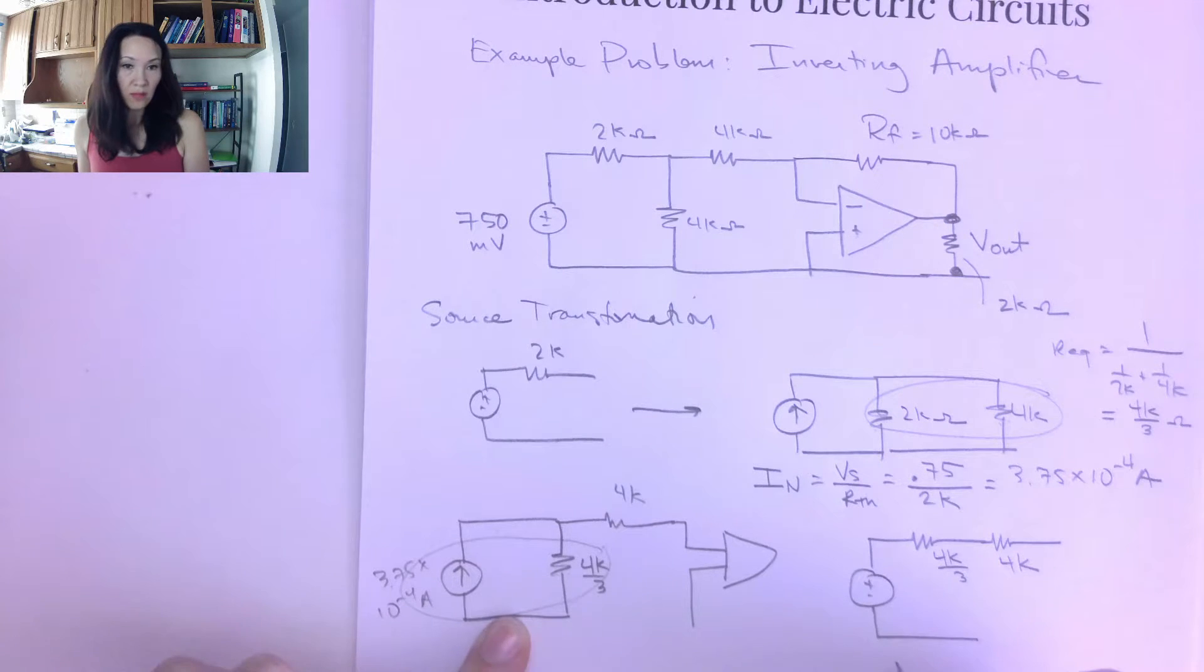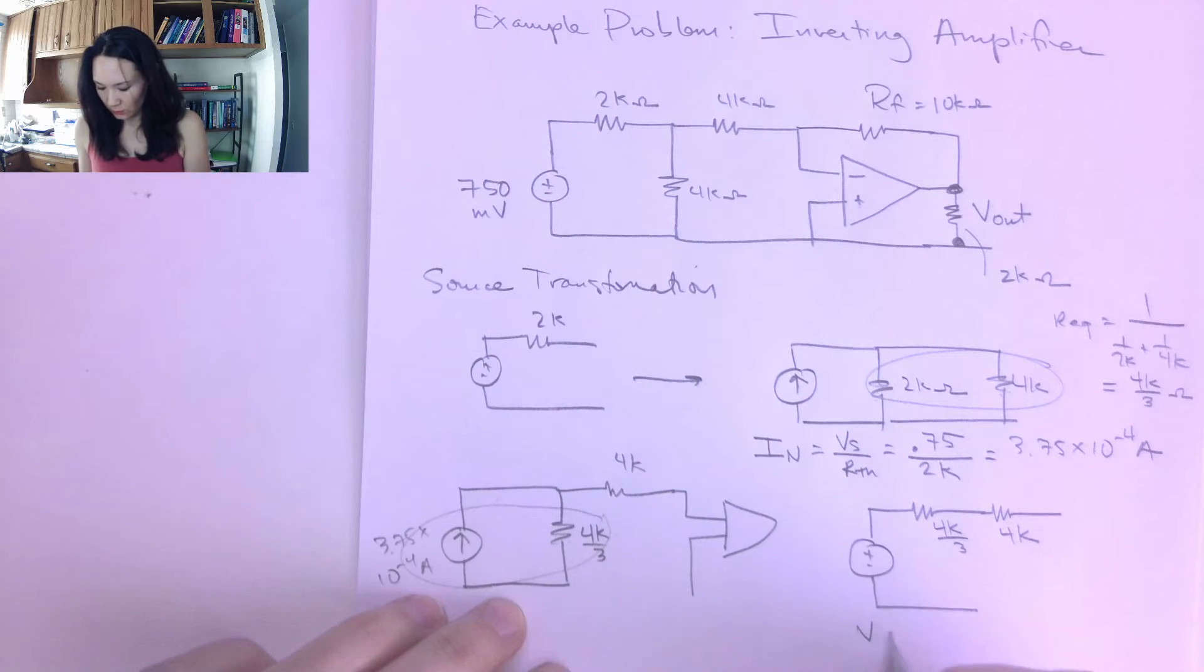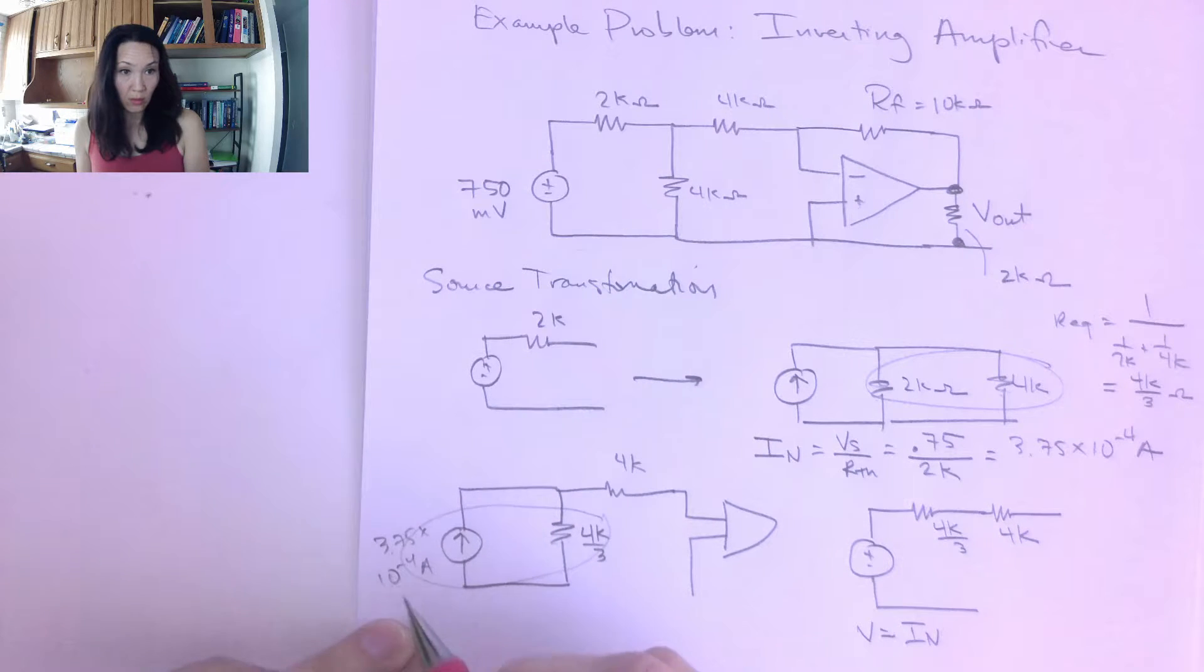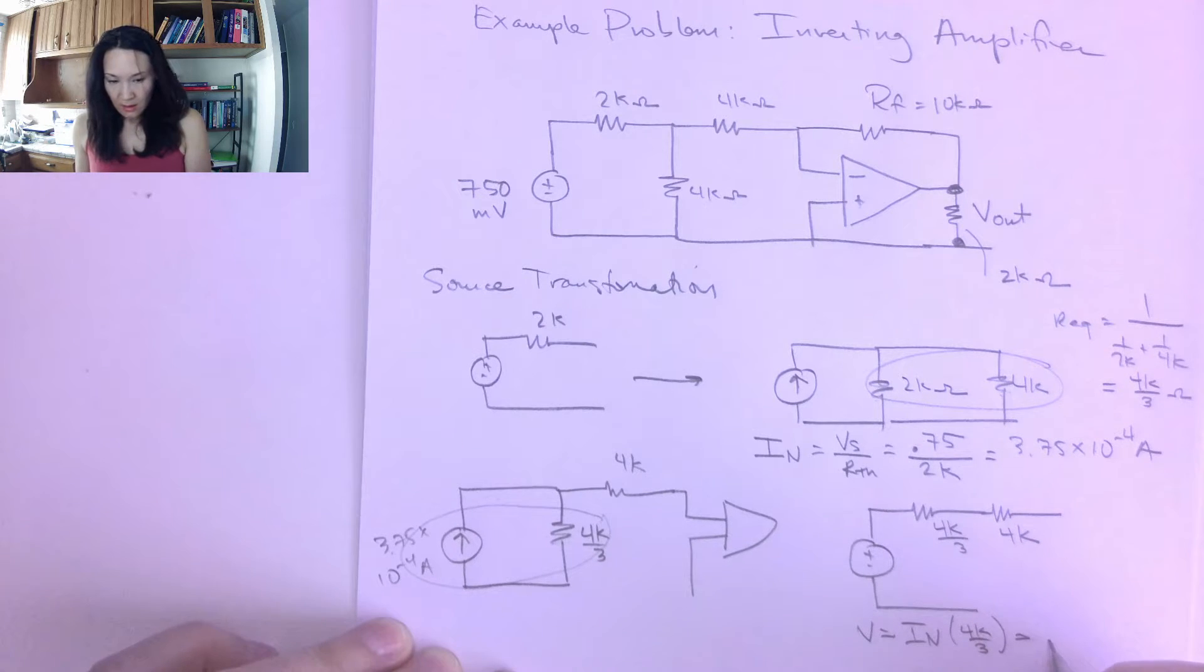So that's 4k over 3. That's now in series with this 4k ohm resistor. And then what's the value of this equivalent voltage source? Well, this is just going to be given by taking that I Norton I found before, the value of this current source, times my R-thevenin, which is now 4k over 3. So here, when I do this calculation, I get, it's nice, I get 0.5 volts.